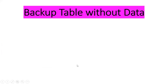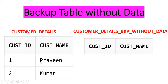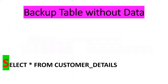Now we will see one more example: backup table without data. The customer_details table has two columns and two rows. I want only the data definition — I don't want the data. Definition essentially means only the columns: customer ID and customer name, without data. If I put SELECT * FROM customer_details, it will project all records — we have two records.